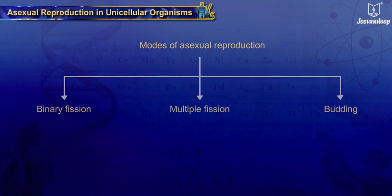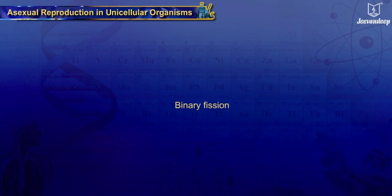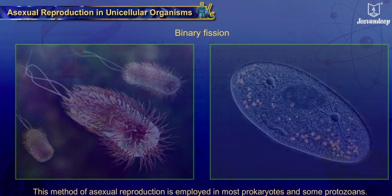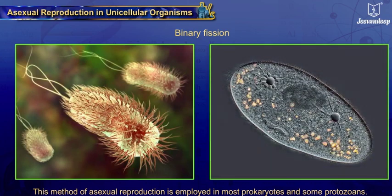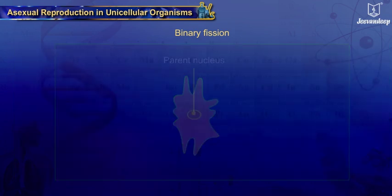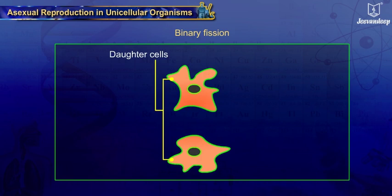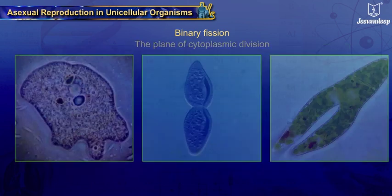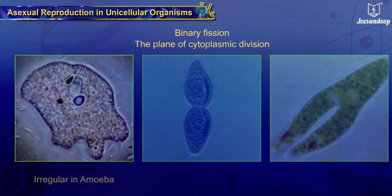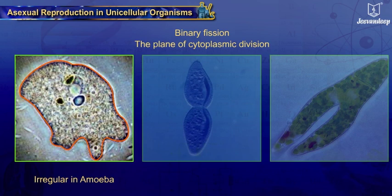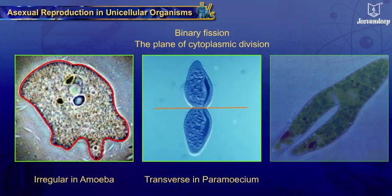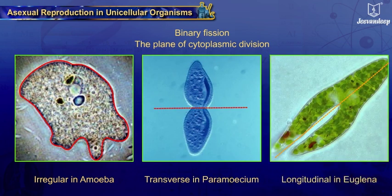Binary fission is employed in most prokaryotes and some protozoans. The single cell divides into two, producing two daughter nuclei. Binary fission takes place during favorable conditions. The plane of cytoplasmic division is irregular in amoeba, transverse in paramecium, and longitudinal in euglena.